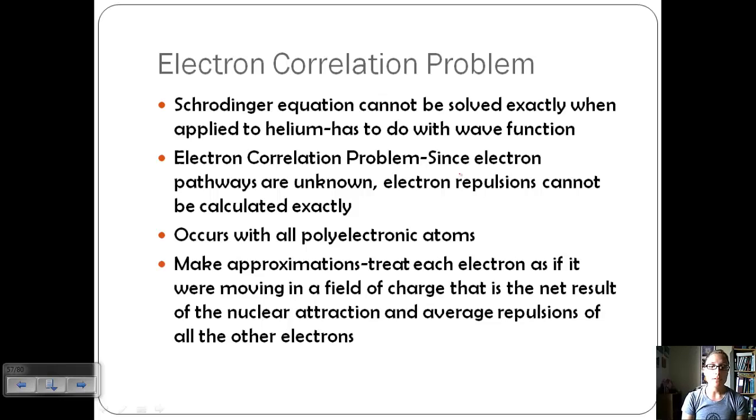We need to make approximations. We're going to treat each electron as if it were moving in a field of charge that is the net result of the nuclear attraction and the average repulsions of the other electrons.